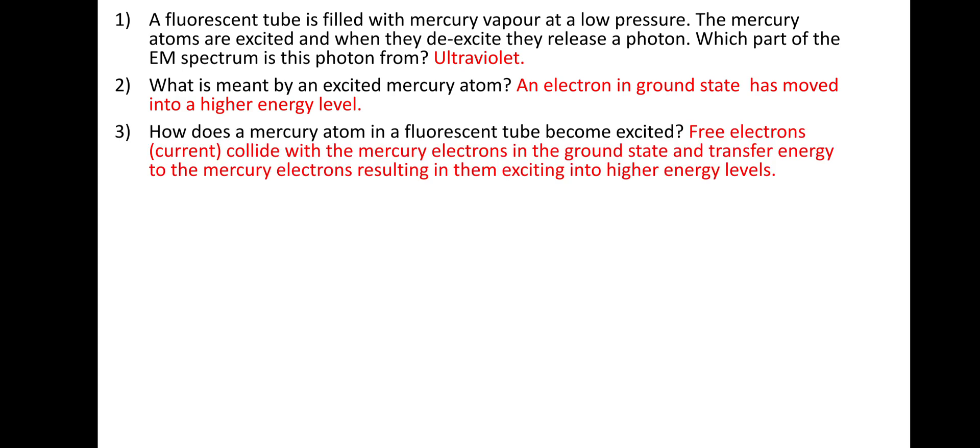Third question, how does a mercury atom in a fluorescent tube become excited? Well, the free electrons of the current collides with the mercury electrons in the ground state, and the current will transfer energy to the mercury electrons, resulting in them exciting into higher energy levels.